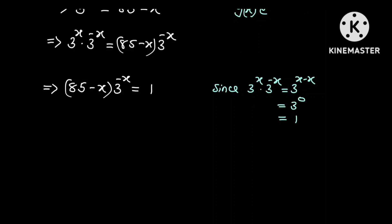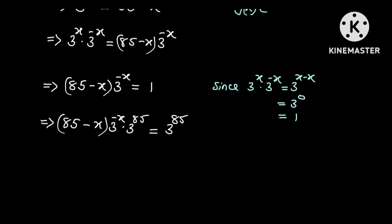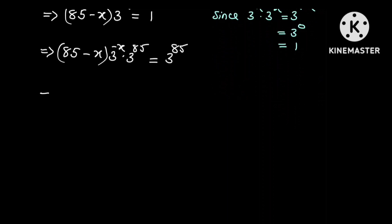Again, if we multiply both sides by 3 raised to the power 85, we are going to have 85 minus x multiplied by 3 raised to the power negative x, multiplied by 3 raised to the power 85, equal to 3 raised to the power 85. This implies that 85 minus x multiplied by 3 raised to the power 85 minus x is equal to 3 raised to the power 85.